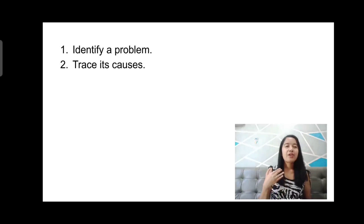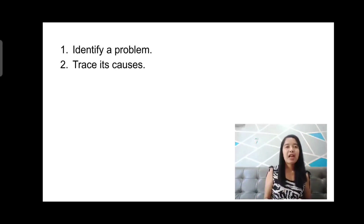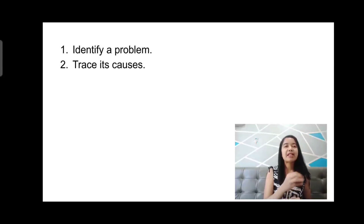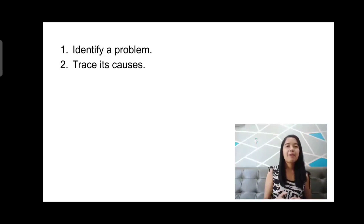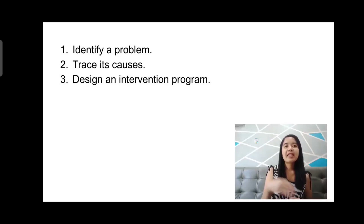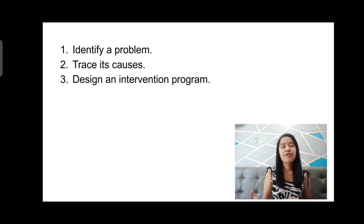Before I could design an intervention program to help solve this problem, the second thing I need to do is trace its causes — searching online and reading studies. It might be because the reading selection is not appropriate to the reading level, or because students have limited vocabulary. After researching the root cause, I can then identify and select an appropriate intervention program.